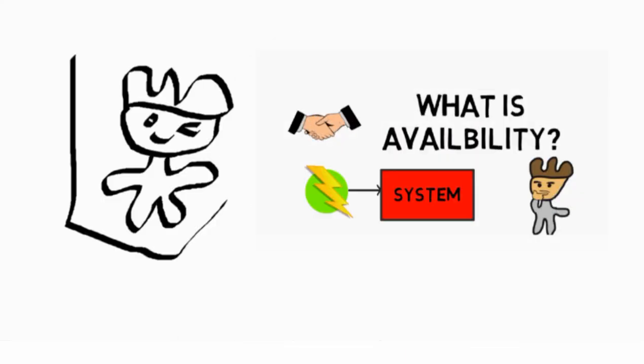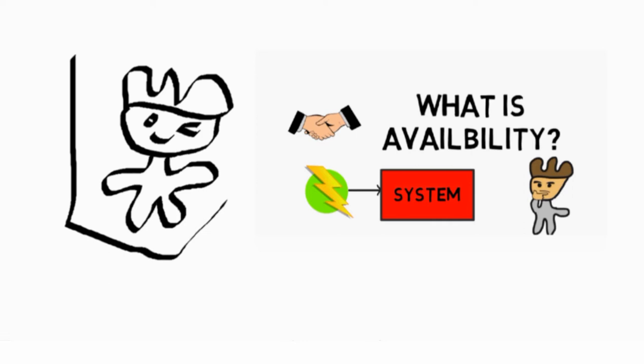Before we jump in, check out the previous part of the series to learn about what availability is. Now, first let's clear out this small concept of availability applied to a non-flow process.